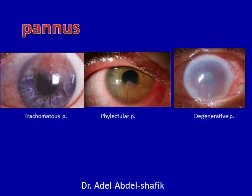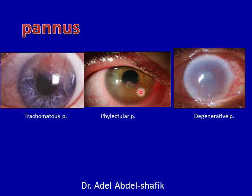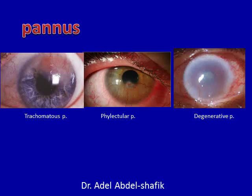Now I come to the last point: pannus. Pannus is not an ulcer — it is superficial vascularization and cellular infiltration of the cornea. It can be seen in cases of trachoma in the upper part of the cornea, in cases of antigen-antibody reaction and phlyctenular conjunctivitis in any location of the cornea, or degenerative pannus — a circumferential pannus in cases of prolonged corneal edema secondary to chronic iridocyclitis or absolute glaucoma.